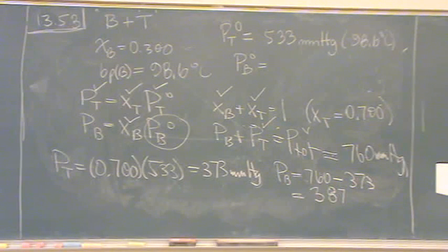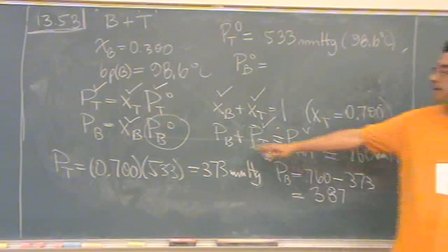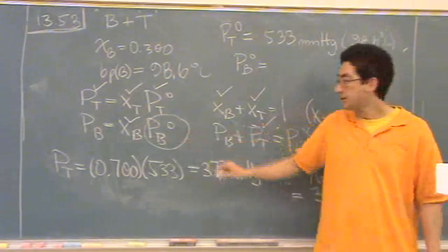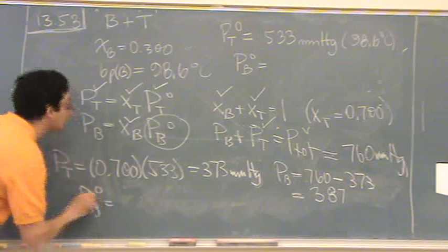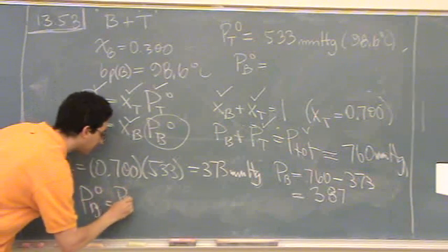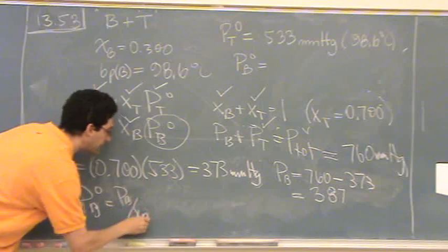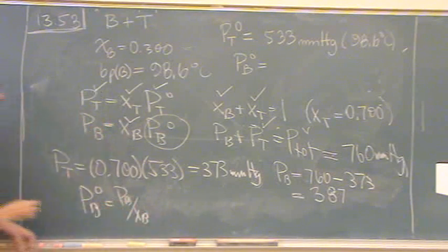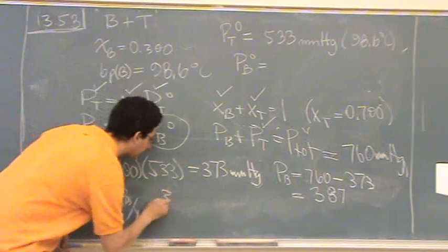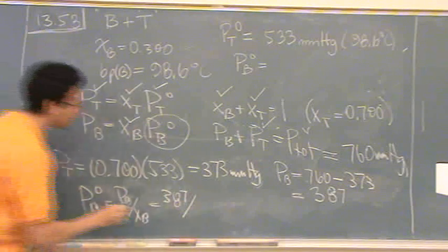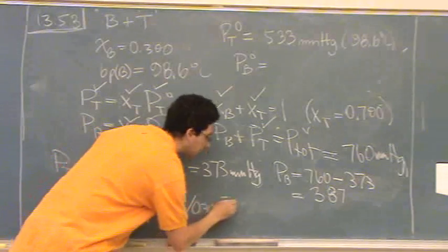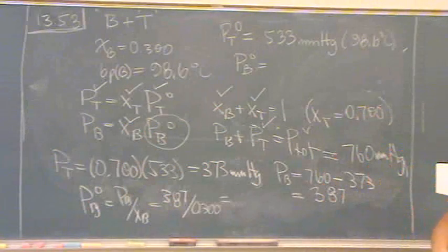Okay, so far. Now let's see what I'm missing. The only thing I'm missing is the pure pressure of B. So Pb naught equals Pb over Xb, which is 387 divided by Xb. That's 0.3. That's 0.3. And that equals, let's see what they calculated,